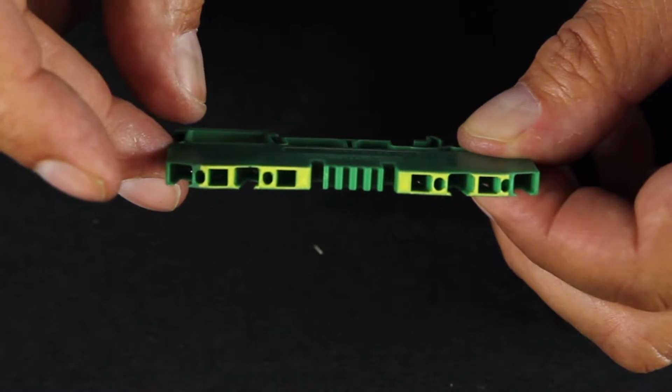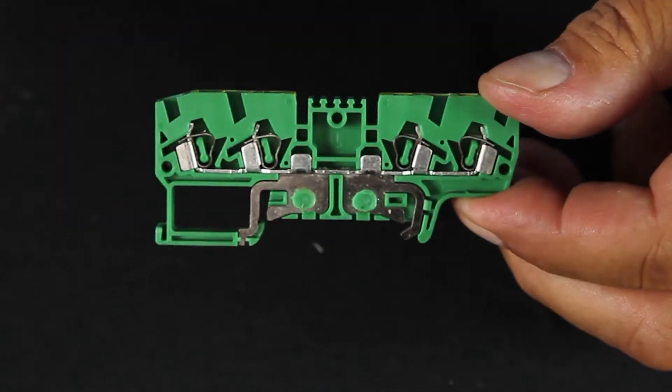Connect your ground cables to the tension clamp, which then safely grounds to your grounded DIN rail.